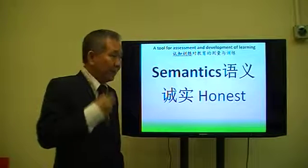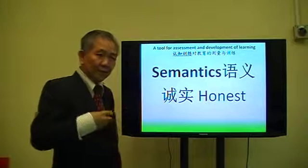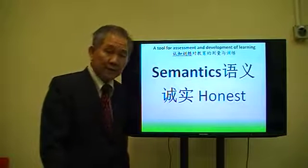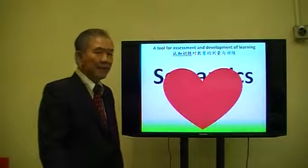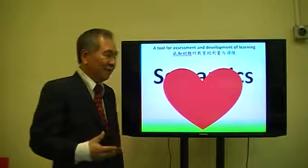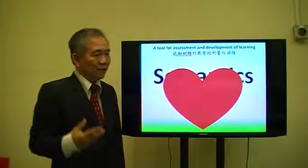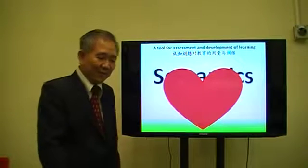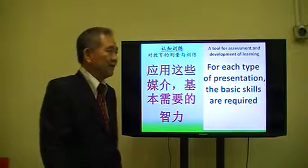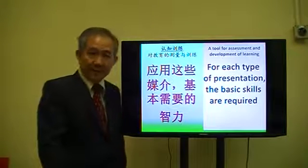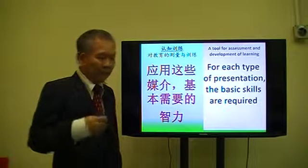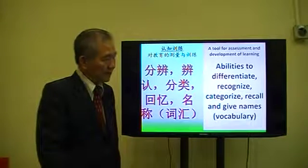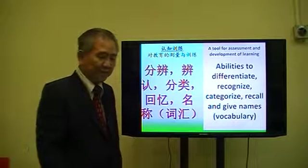The third way we pass knowledge is through semantic. Semantic covers things we cannot draw in figural — for example, you cannot use a simple drawing to accurately represent 'love': a father's love for a child, or brotherly love. Each type of representation requires basic skills and abilities — like the ability to differentiate, to recognize, to categorize, to recall — and these have different names.